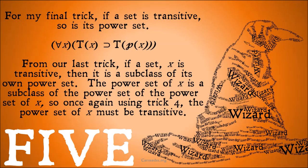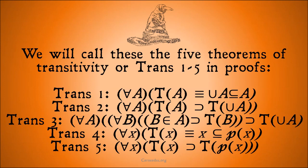We will call these five theorems of transitivity Trans 1 through 5 in proofs. Trans 1: for all A, A being transitive is materially equivalent to the union of A being a subclass of A. Trans 2: for all A, A being transitive implies that the union of A is transitive. Trans 3: for all A and all B, if B is a member of A and B is transitive, that implies that the union of A is transitive. Trans 4: for all X, X being transitive is materially equivalent to X being a subclass of the power set of itself. Trans 5: for all X, if X is transitive, then the power set of X is transitive.